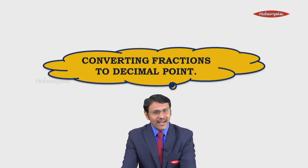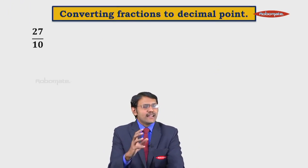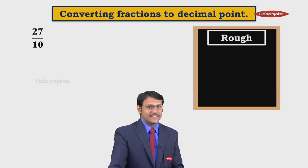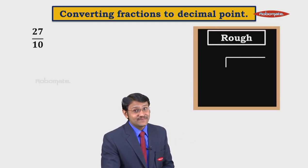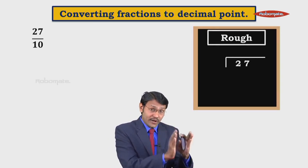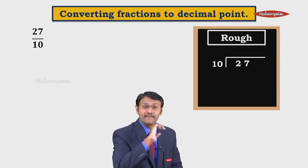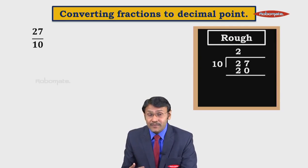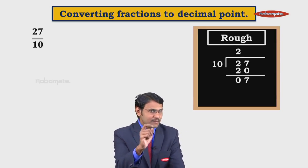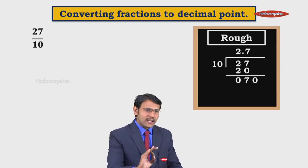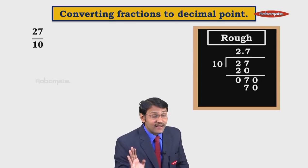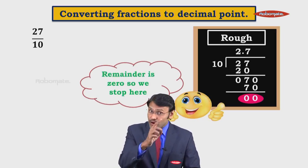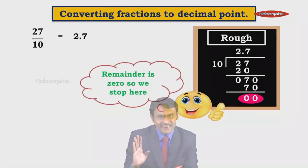Now converting fractions to decimal point. We are given fractions and we have to convert them into decimal point using division. We have 27 inside and 10 outside as the divisor. We divide: 10 twos are 20, remainder is 7. Put decimal point, bring down 0 — 10 sevens are 70, subtract, remainder 0. So your answer is 2.7.